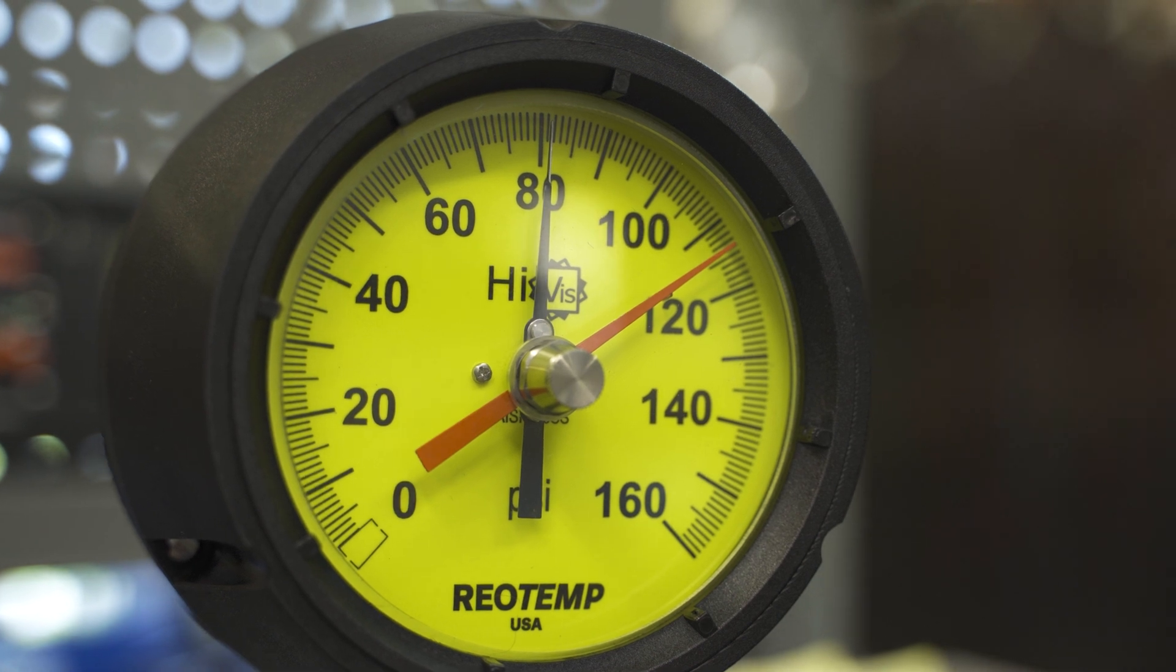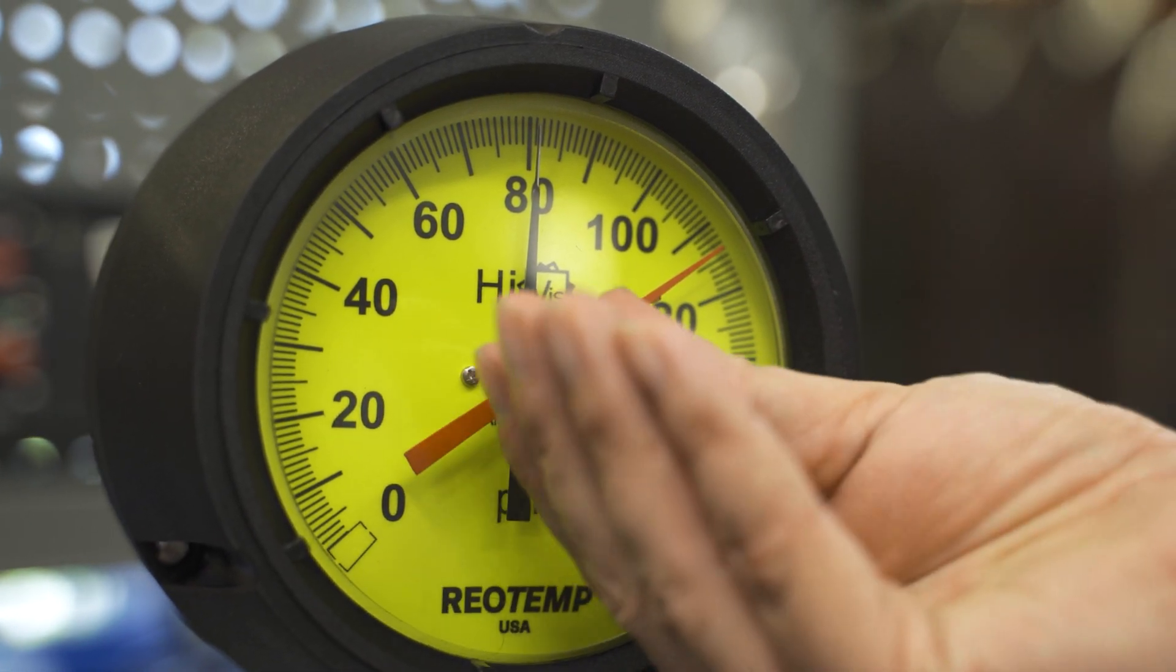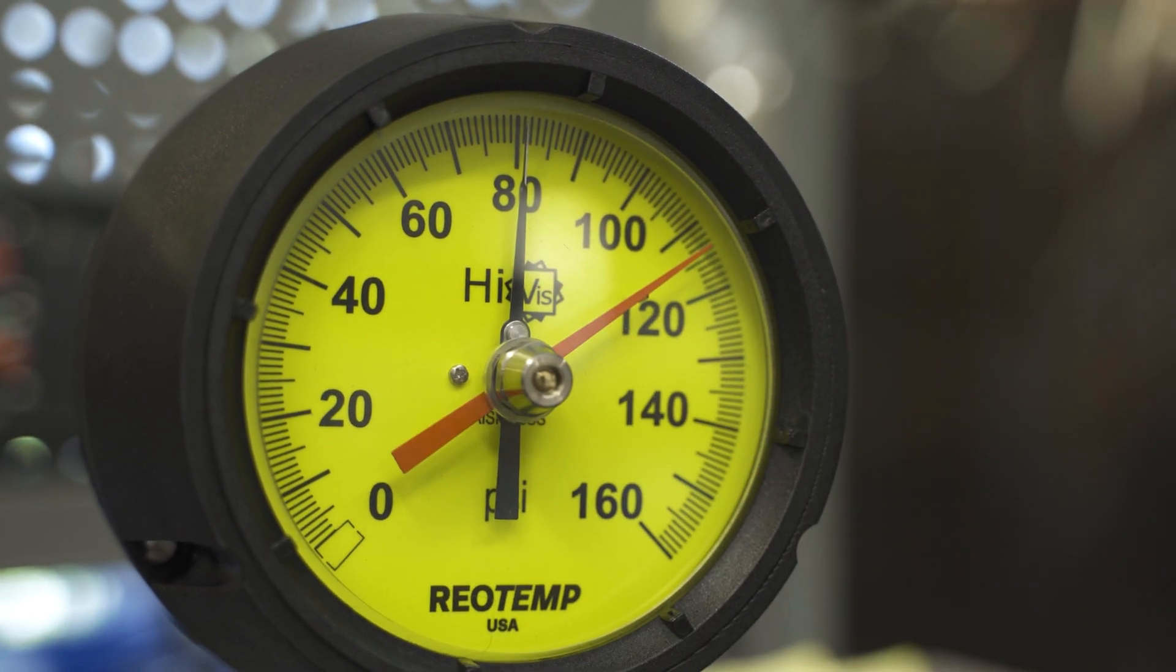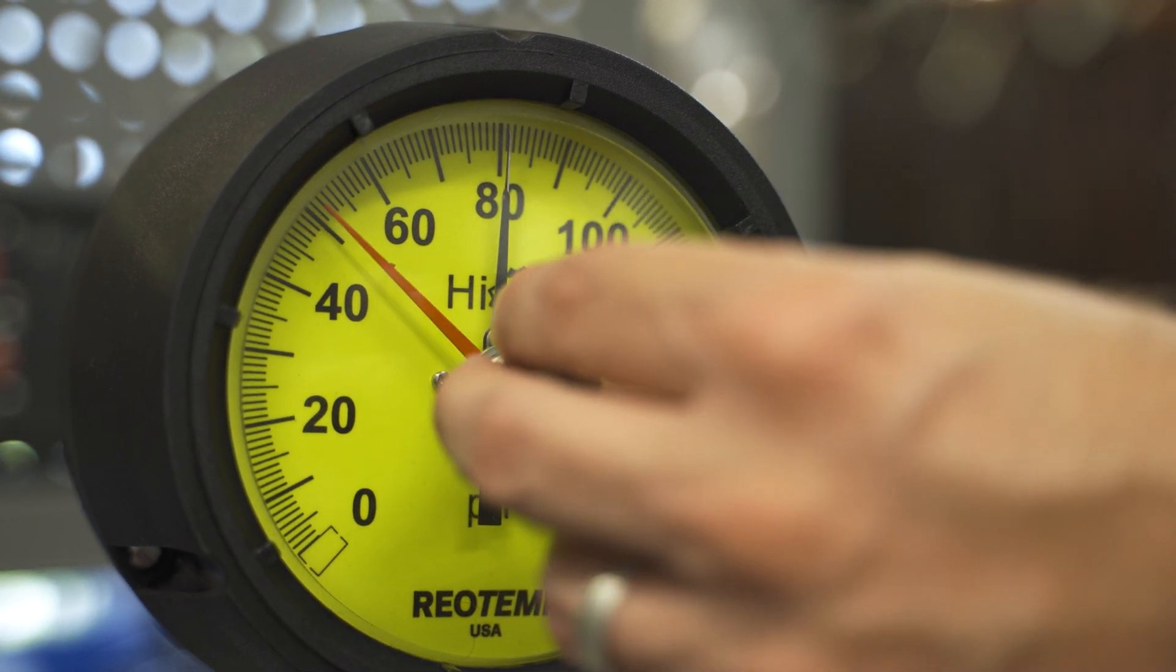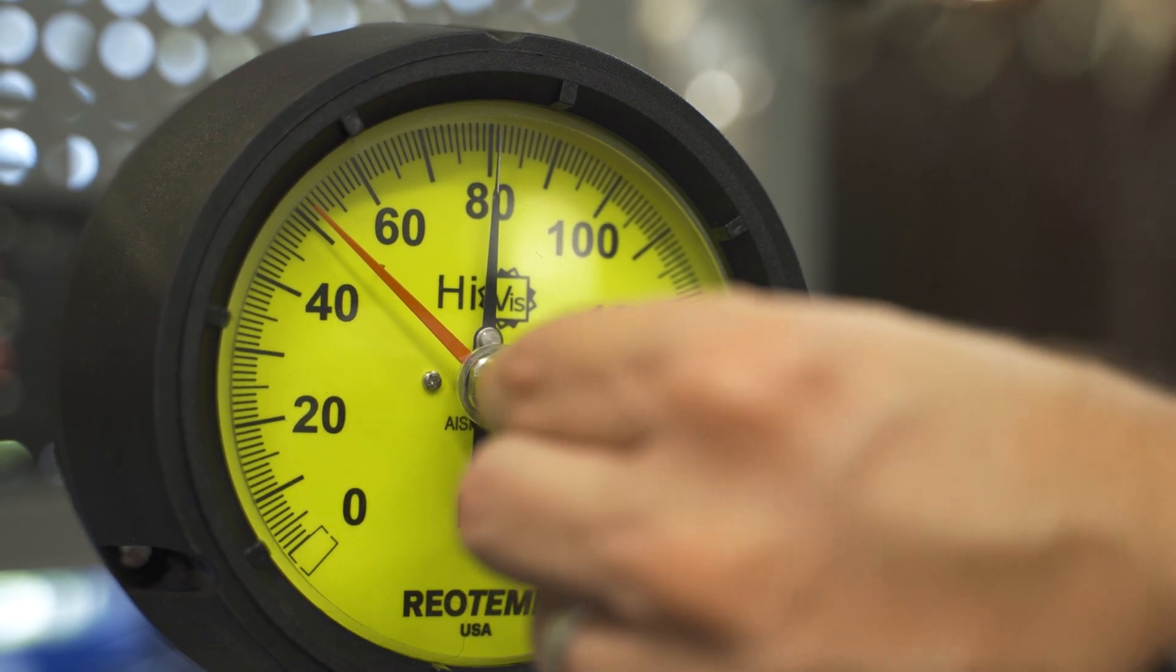To operate the tamper-proof max pointer, remove the cap, take your key, turn the knob into its desired location, and reinstall the cap.